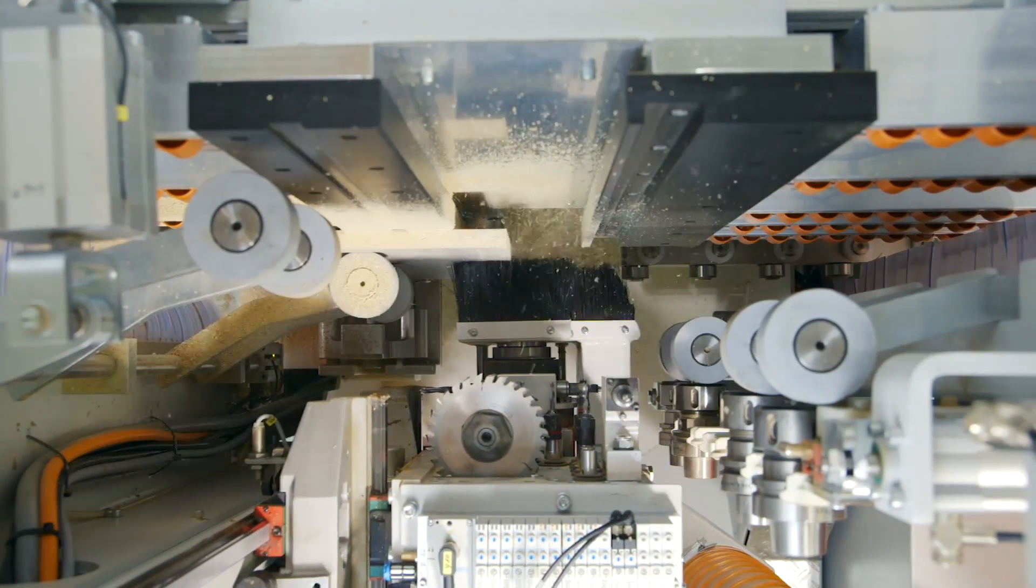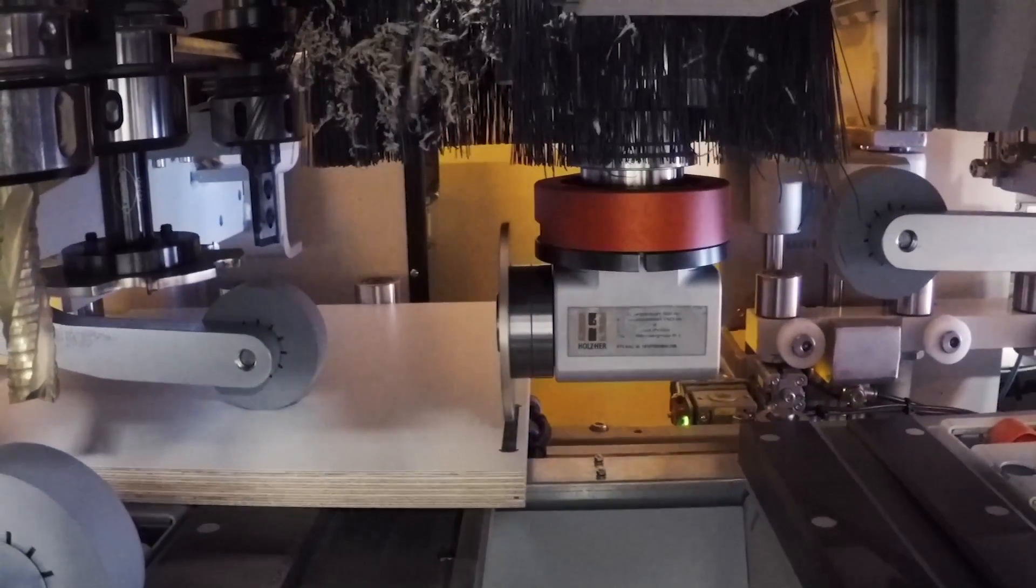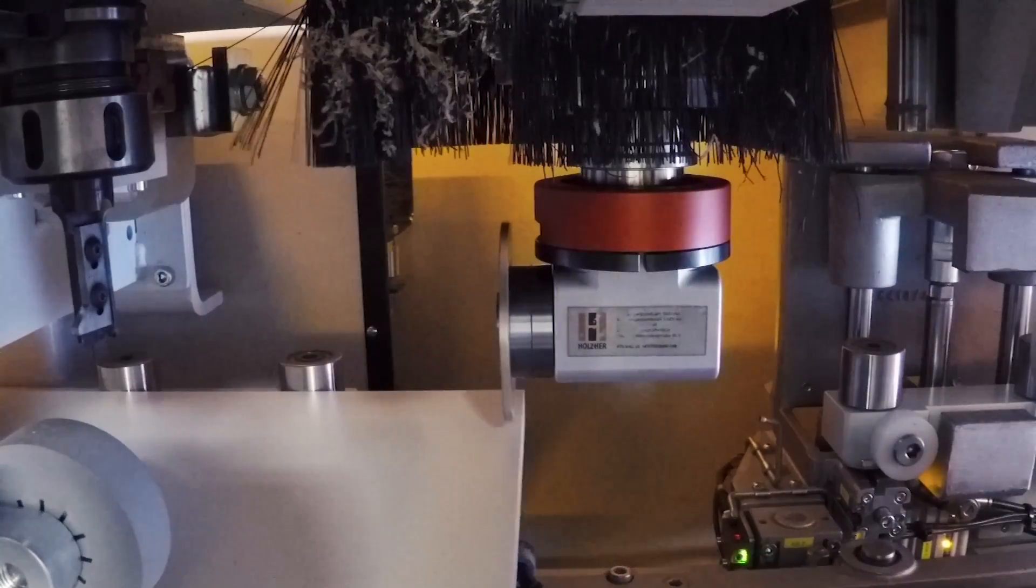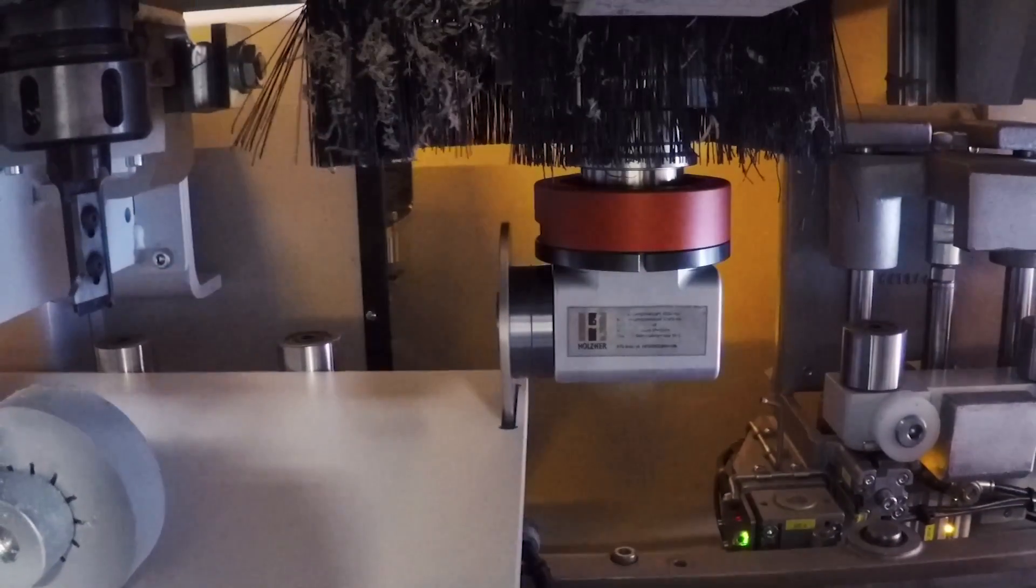Six tool changing stations for tools up to 110 mm diameter and a 7.5 kW strong HSK spindle are set as basic equipment.